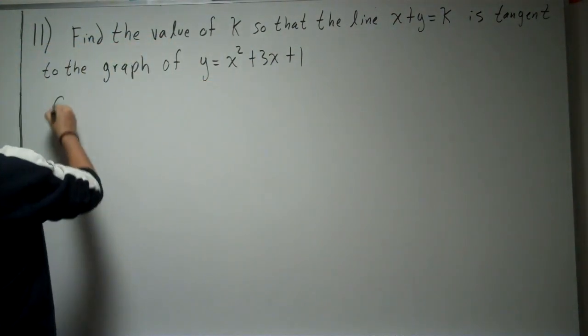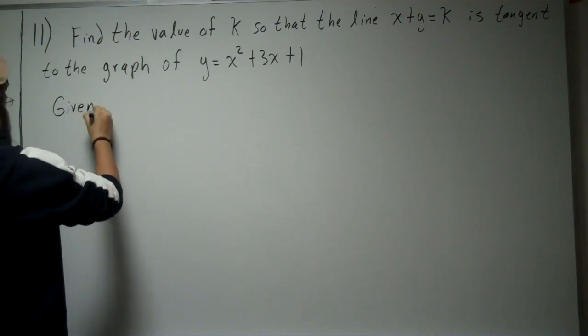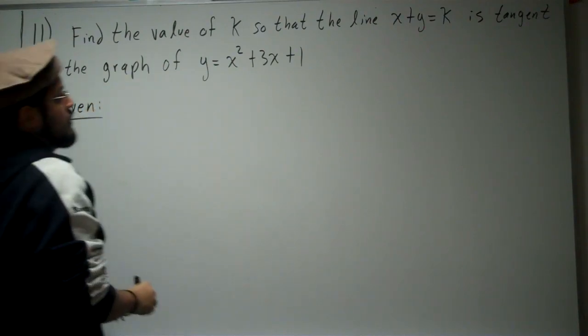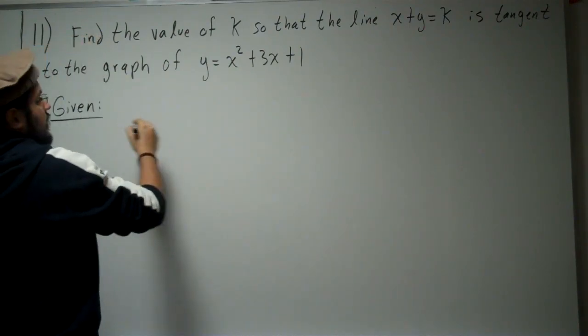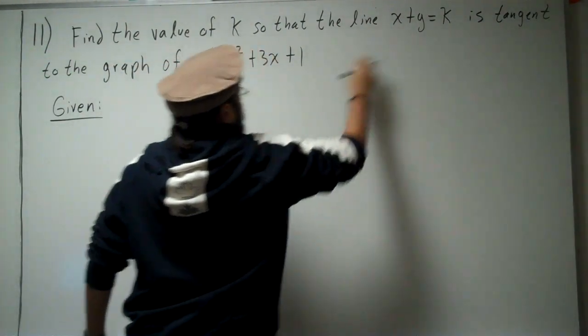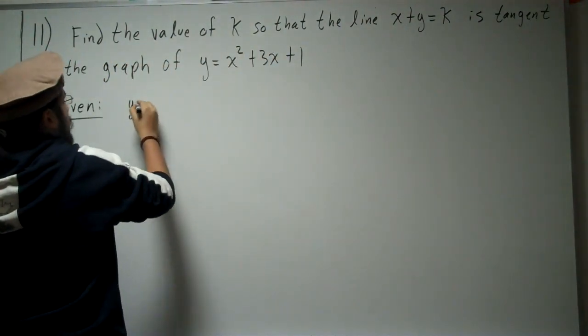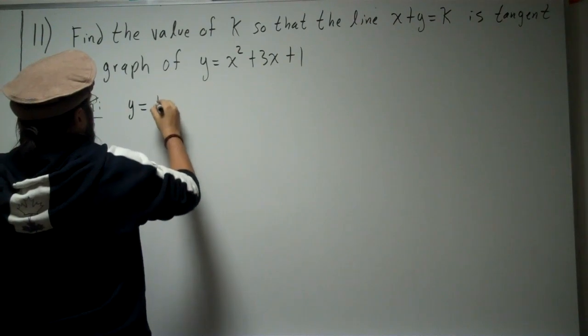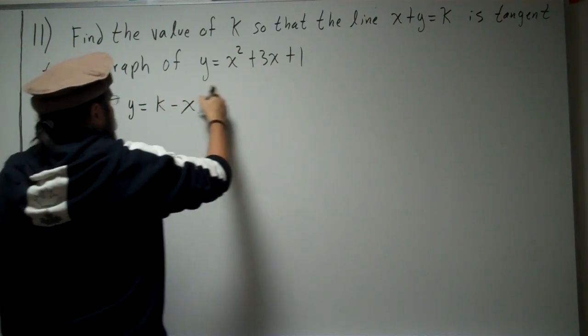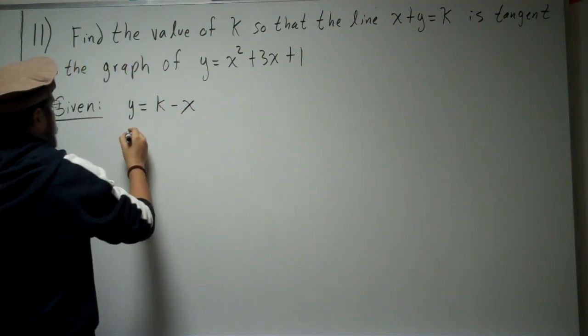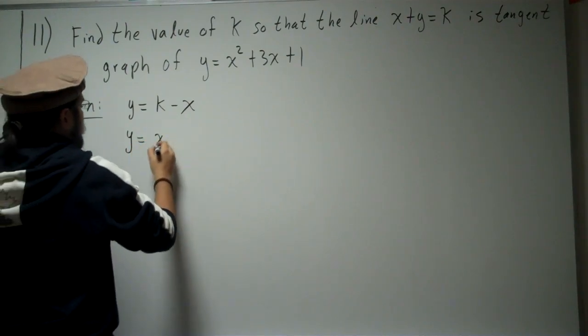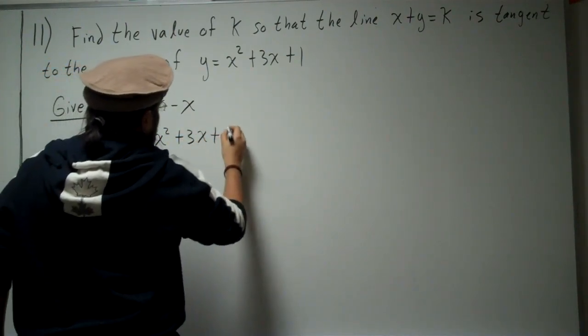First, let's write what's given. They give us two equations. This equation, which I'm going to solve for y: y equals k minus x. And this equation: y equals x squared plus 3x plus 1.